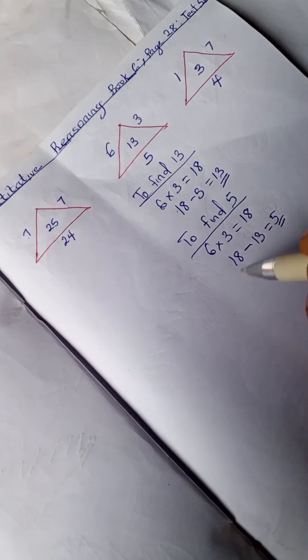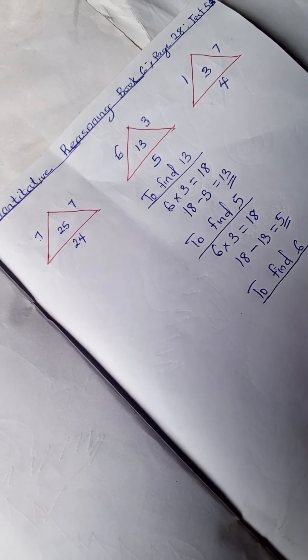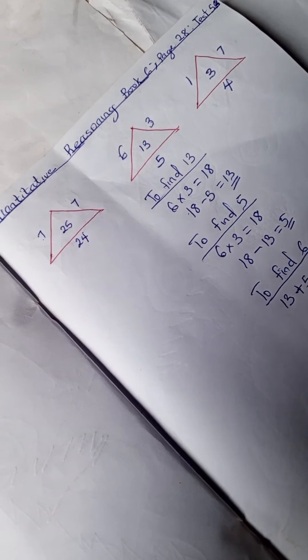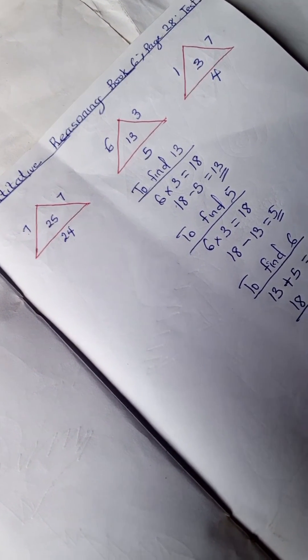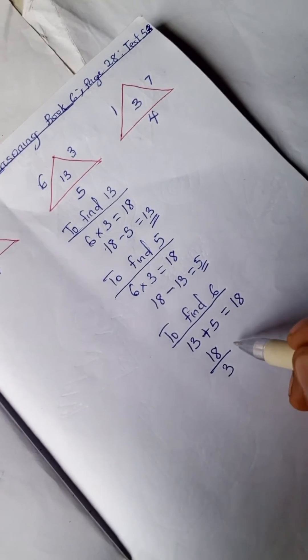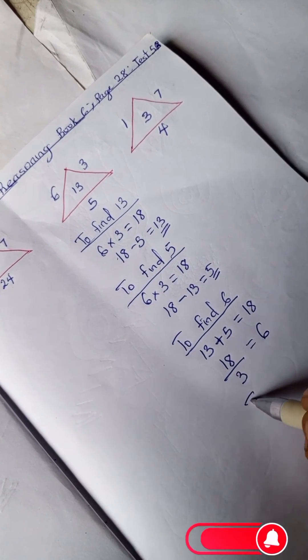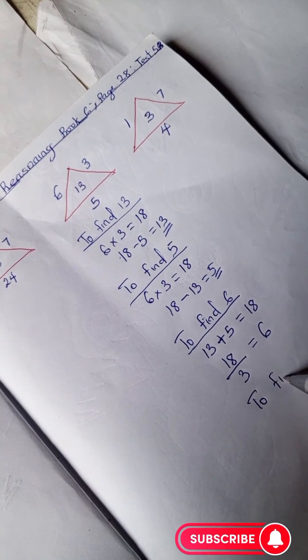Now let's find 6. We know that 13 plus 5 is 18, and 18 divided by 3 is 6. Don't forget to subscribe to this channel.